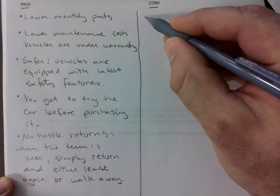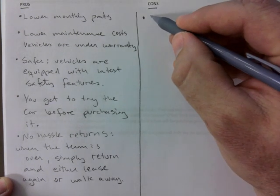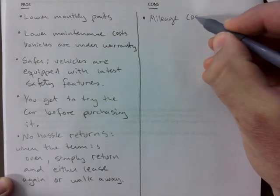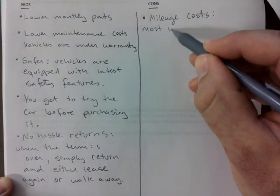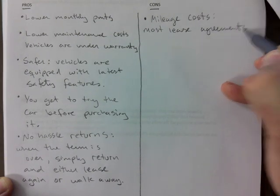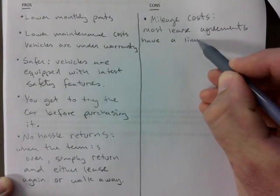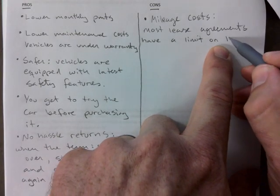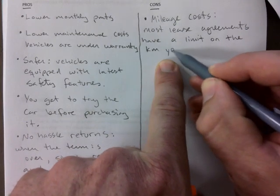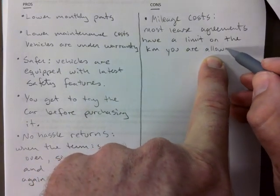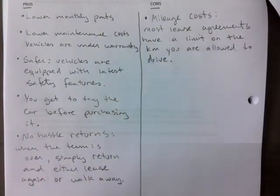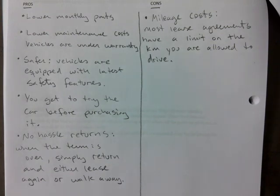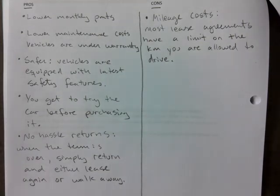The cons. The biggest reason I wouldn't buy these cars - there are mileage costs. Most leases or lease agreements have a limit on the kilometers you are allowed to drive. There's a mileage restriction. Sometimes it's just a fixed number, like in two years you're only allowed to drive 40,000 kilometers. If you go over that, if you bring it back they're like okay you went over, we're going to charge you extra. Sometimes it's a per year thing - you're allowed to drive 20,000 kilometers per year. But there's a restriction.